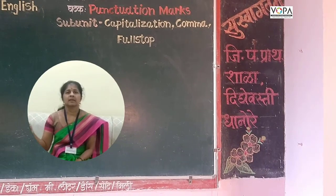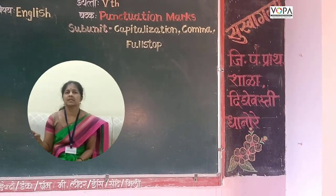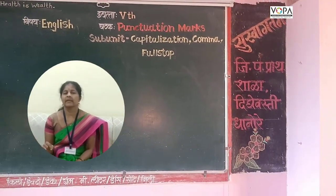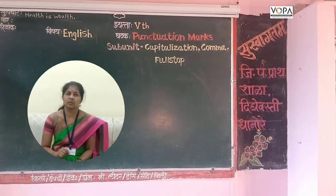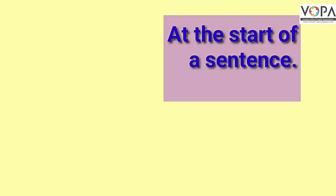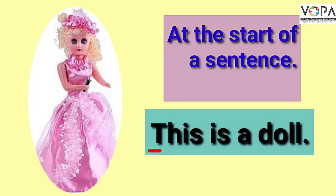Manjej vaat kya capital letters ta wapar ko the karawaya cha. At the start of a sentence, manjej vaat kya cha suruwaati cha aksar capital letters lihaai cha aste ya thikani. This is a doll — yaa vaat kya madhe ti hai aksar suruwaati cha hai, manun ti hai aksar capital letters lihaave.